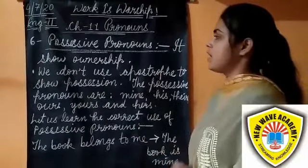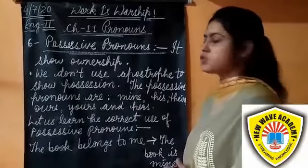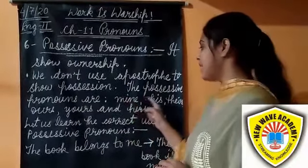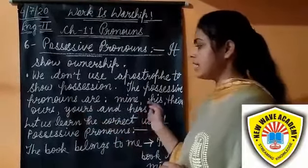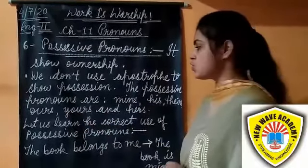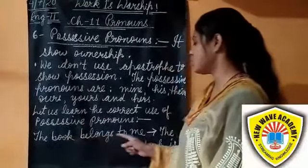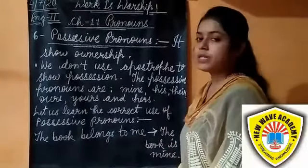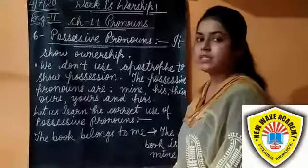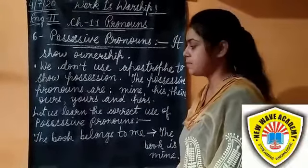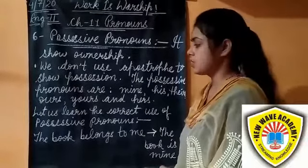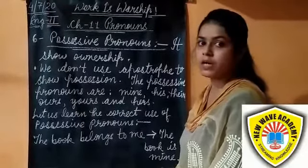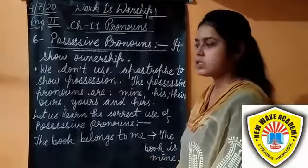Possessive pronouns show ownership. We don't use an apostrophe to show possession. The possessive pronouns are: mine, his, theirs, ours, yours, and hers. For example, 'The book belongs to me' can be written as 'The book is mine.' 'The bike belongs to you' becomes 'The bike is yours.' 'The house belongs to us' becomes 'The house is ours.'